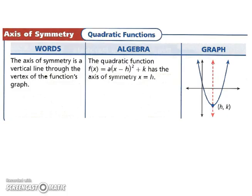Let's start by looking at the axis of symmetry. The axis of symmetry is a vertical line through the vertex of the function's graph. So it's a vertical line that essentially cuts the parabola in half. Whatever's on the left will be the same as whatever's on the right. And the coordinate will be h, k, kind of like x, y, but with h and k so that way it's very specific to the vertex.